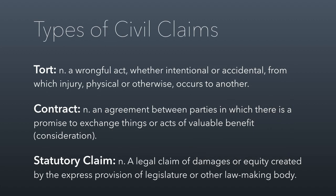The kinds of claims you can bring as a private individual in civil court generally fall into three categories. The first is a tort — where you commit a wrongful act, whether intentional or accidental, which injures somebody else or their property. You can also bring a contract violation to court if you've come to an agreement involving a promise to exchange something of value — that's called consideration. If you made that promise or agreement, a contract is formed, and breaking it is something you can file a civil claim about. And finally, sometimes laws are created that give you a specific right for a civil claim just because the statute says so — any claim of damages or equity that results because the legislature has written that right into the law.